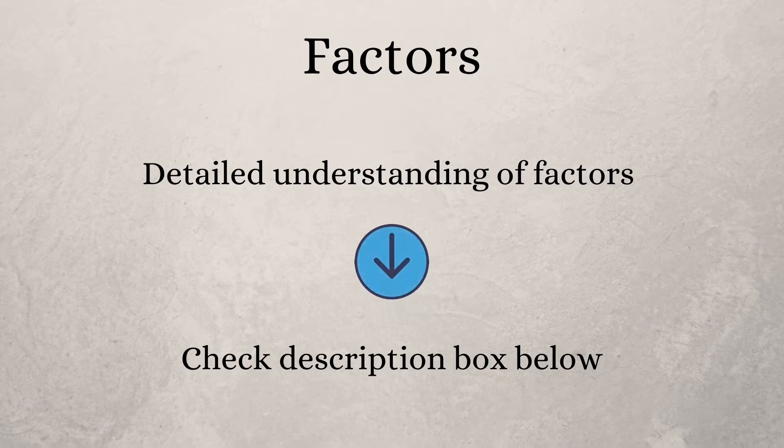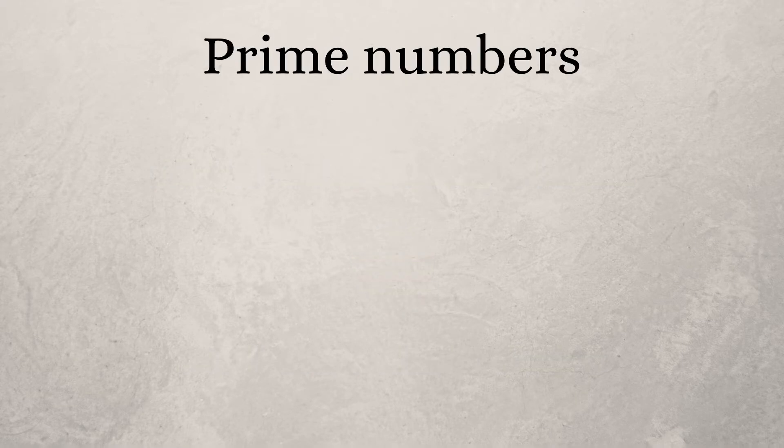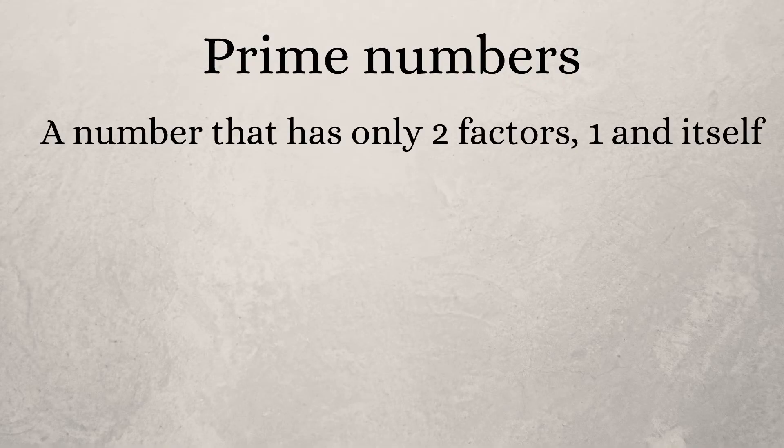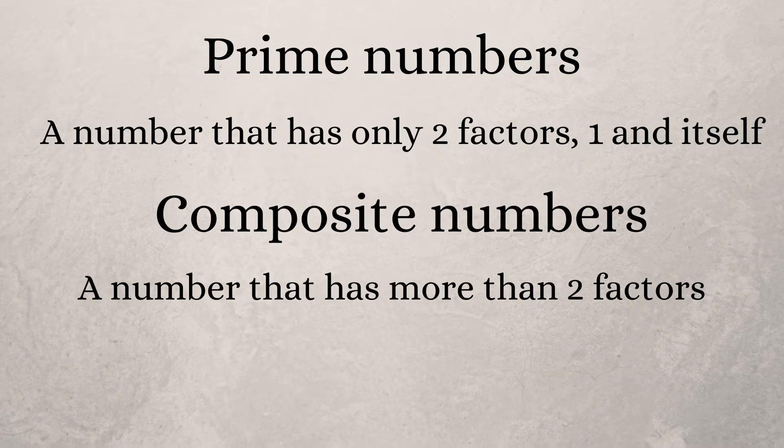Now we'll move on to prime numbers. A prime number is any number that has only two factors: one and the number itself. So prime numbers are not divisible by any other number.